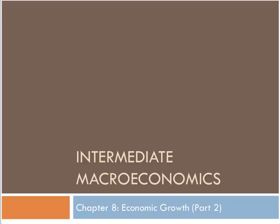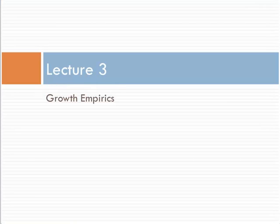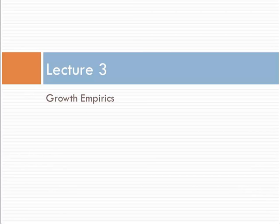We'll continue talking about economic growth in chapter 8 with lecture number 3, and now we want to look at some of the empirics. We want to take this model really to the data and see: do the basic predictions that this model has cohere with the data? Do they match up with the data, or does it basically just come out to be a silly model?